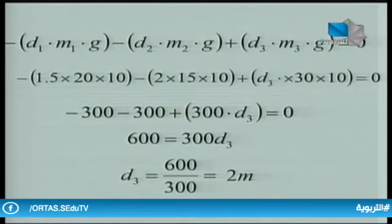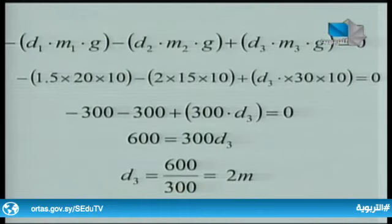أي يجب أن نضع الجسم الثالث ذا الكتلة 30 كيلوغرام على بعد 2 متر من محور الدوران حتى تكون الجملة في حالة توازن.